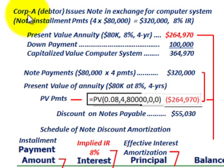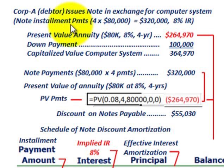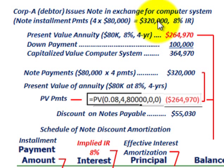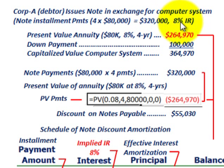From Corporation A's perspective as the debtor, they issued this note in exchange for the computer system and have to determine the effective interest they're going to be paying. The note has four installment payments of $80,000 each, totaling $320,000 in payments plus the $100,000 down payment. We'll be working with the 8% interest rate throughout this example.